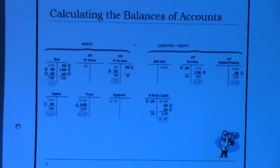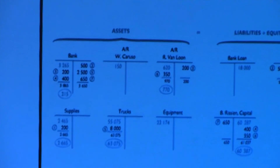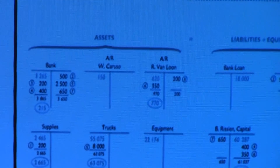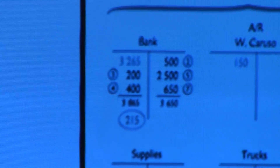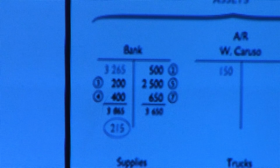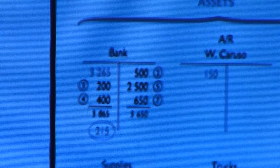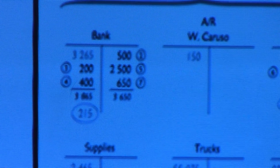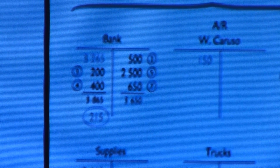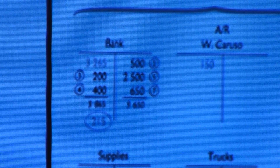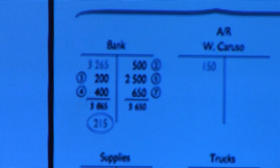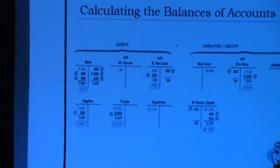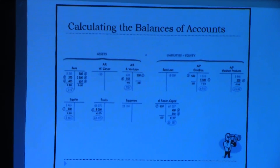The next slide gives you a visual showing several entries under each T-account. Looking at the bank account, you can see three transactions on the debit side and three on the credit side. You total both sides, take the difference, and the difference goes on the debit side because the bank account is an asset. As long as there's a positive number, it should be on the debit side. That's how you calculate T-account balances, which together comprise your ledger.